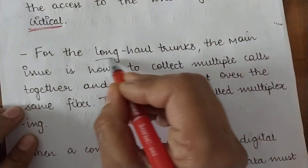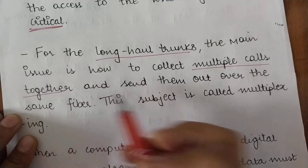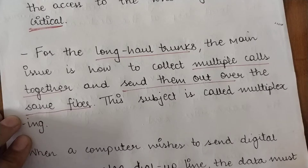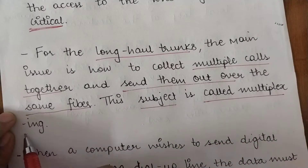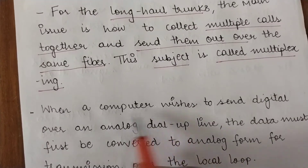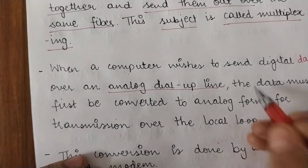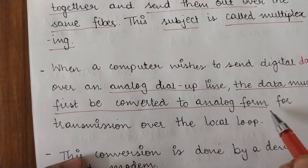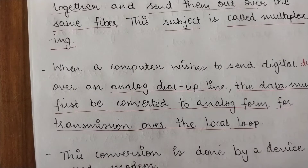For the long-haul trunks, the main issue is how to collect multiple calls together and then send them out over the same fiber. This phenomenon is called multiplexing. When a computer wishes to send digital data over an analog dial-up line, the data must first be converted into analog form for transmission over the local loop, because the local loop transmits data in the form of analog signals.